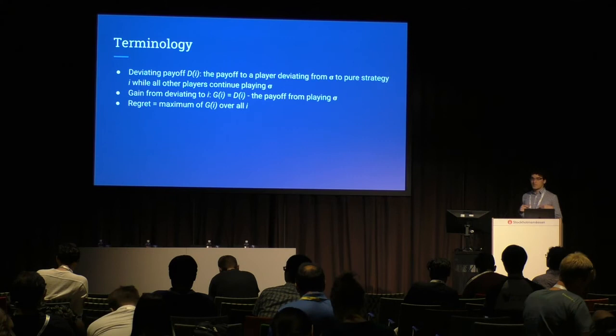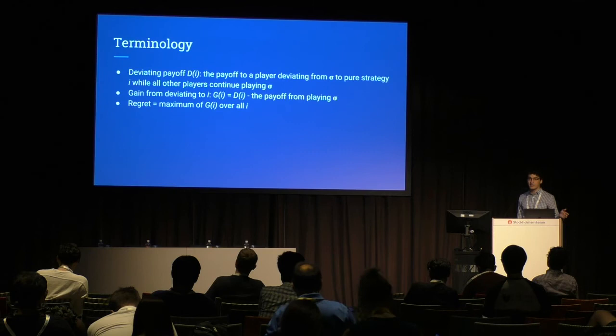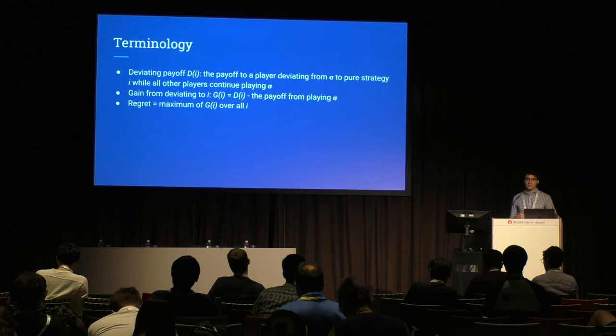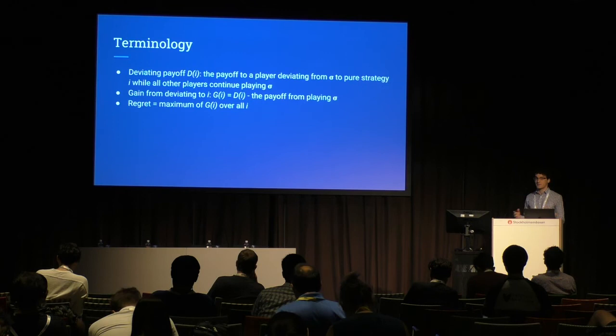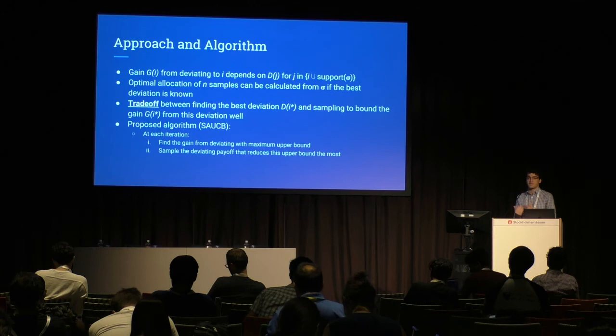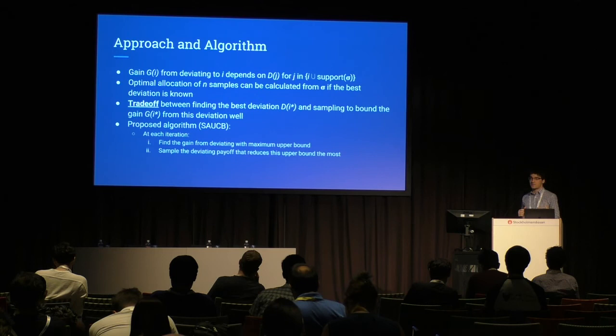We assume the simulator provides samples of a deviating payoff D_i — the payoff of a player who deviates from the profile to some pure strategy i while all others continue playing the profile. From these, we calculate the payoff of playing the profile as a weighted average, and compute the gain from deviating as the deviating payoff minus the profile payoff. Regret is then the maximum of all these gains. The problem is similar to best-arm identification, but the gain for deviating to strategy i depends on payoffs for everything in the support of the profile — so you can't allocate all samples toward finding the best deviation.